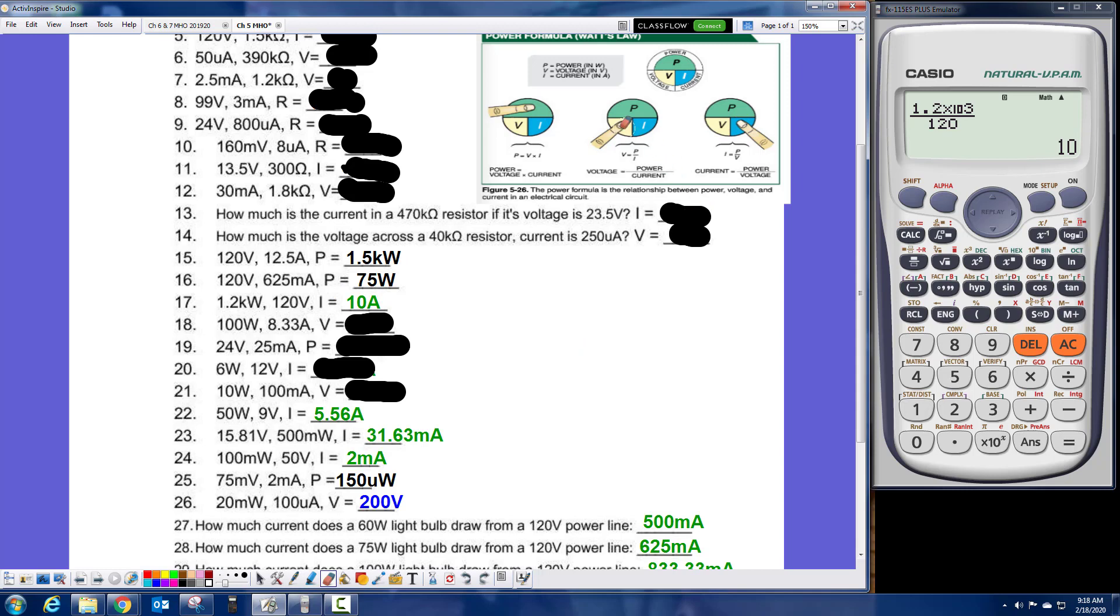The next one, I'm looking for voltage. I cover up voltage. It's P divided by I. So what is my P? 100 over 8.33 amps. And this gives me my answer of 12 volts.